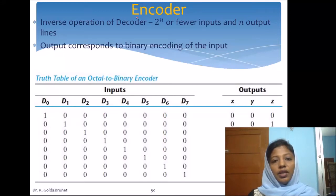The next circuit is the encoder, which is the inverse operation of the decoder. In decoder we have n inputs and 2 power n possible outputs. Here we have 2 power n or fewer inputs, and we have n output lines. The output corresponds to the binary encoding of the input.